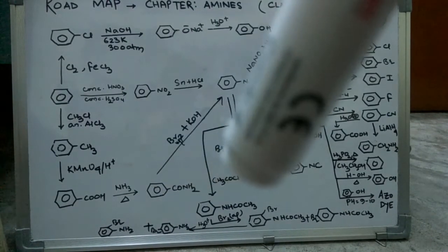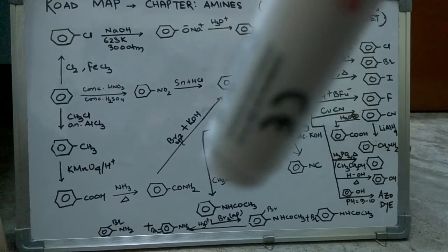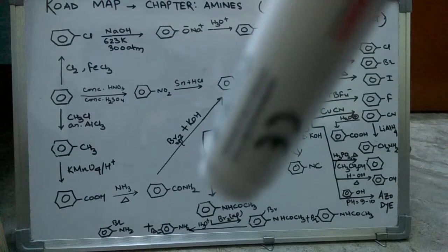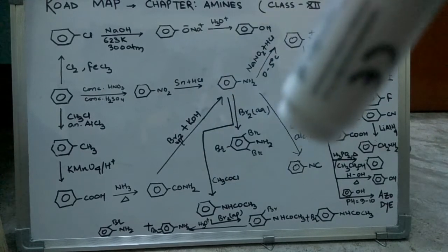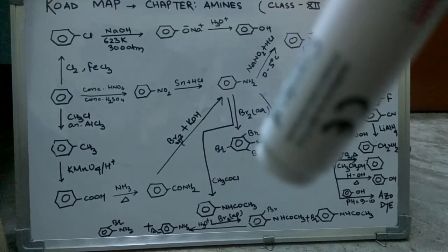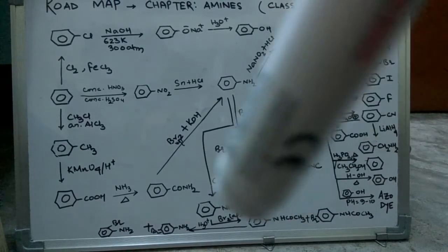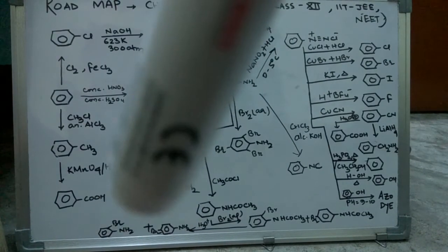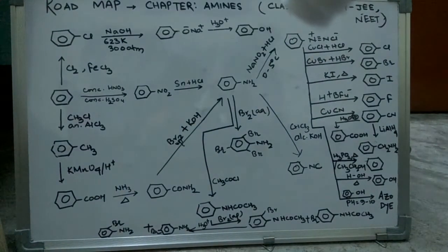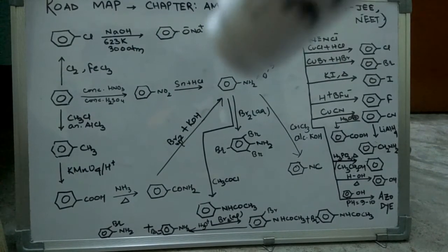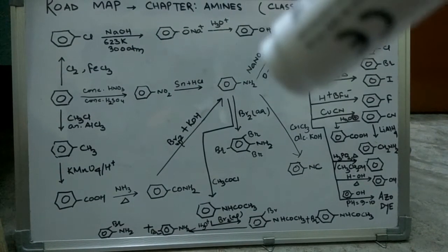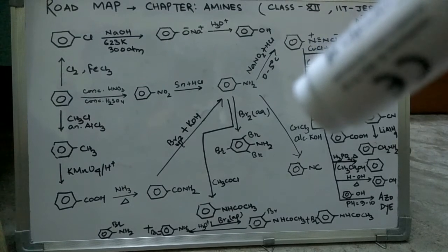Upon adding aqueous bromine, we get tribromoaniline directly from aniline. Upon adding CH3COCl, we get the side group as NHCOCH3, which upon bromination gives us ortho-para products. These ortho-para products can be further hydrolyzed to give us ortho-para bromoaniline.